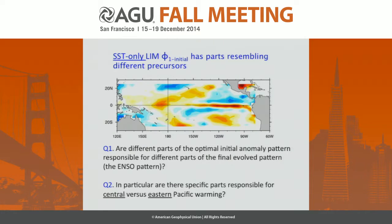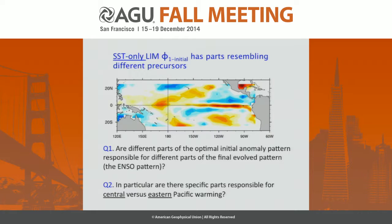This is a robust optimal structure that emerges across several different datasets, and I'll focus on the sea surface temperature-only LIM. In this pattern, we can recognize different features associated with different precursors. The warm anomalies extending from the northeast toward the equator are similar to the positive component of the Pacific meridional mode. In the south, there is an anomaly that may be reminiscent of the south Pacific meridional mode, which has been suggested to favor eastern Pacific events. There are also negative anomalies in the northwest Pacific, which may be associated with the northwest Pacific oscillator.